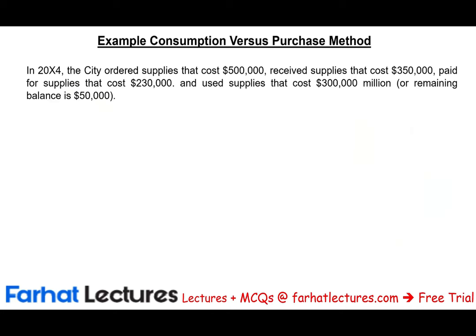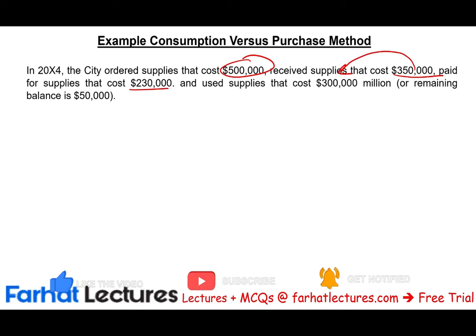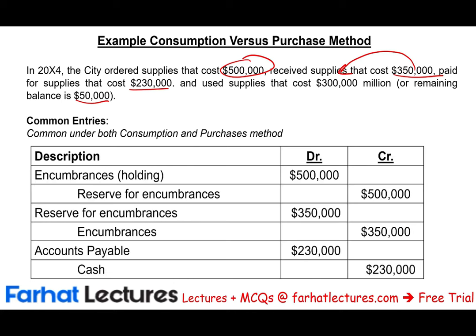We're going to look at this city. In 20X4, the city ordered $500,000 worth of supplies. The supplies received were $350,000, and they paid $230,000. Of the $350,000 received, $300,000 of supplies were used, so the remaining balance in supplies is $50,000. First, I'll show you the common entries whether you are using the consumption method or the purchase method — these entries will not differ. When we placed an order in governmental accounting, we debit encumbrances and credit reserve for encumbrances for the $500,000.